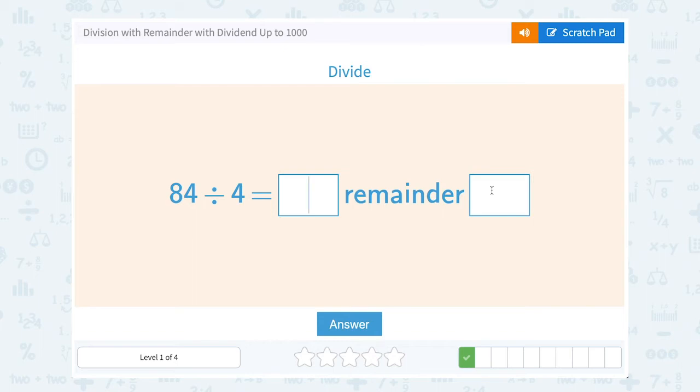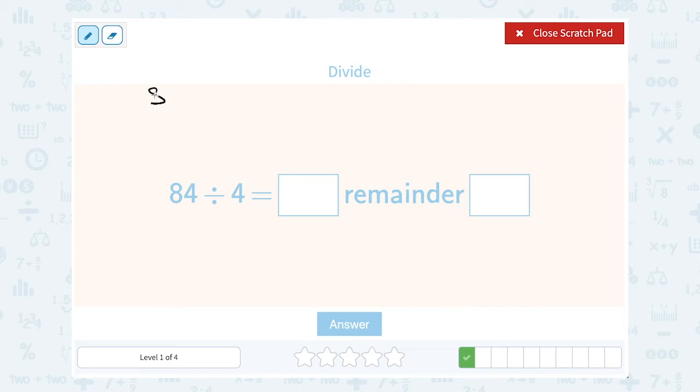84 divided by 4. Let's divide 84 divided by 4. Well, 4 goes into 8 two times. 2 times 4 is 8, so that leaves nothing left over. And I would bring down my 4. 4 goes into 4 one time with nothing left over.